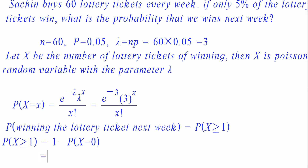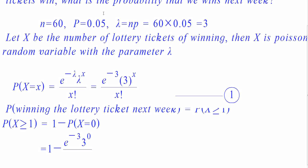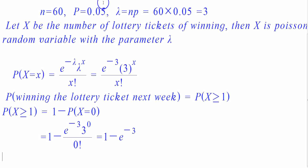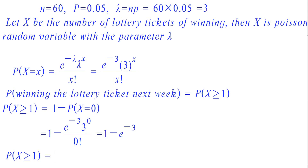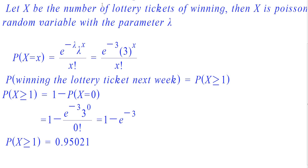That is 1 minus the probability of x equal to 0. Putting x equal to 0 in the equation, we get e raised to minus 3 into 3 raised to 0 by 0 factorial. We know that 3 raised to 0 is 1 and 0 factorial is 1. Therefore, e raised to minus 3 into 3 raised to 0 by 0 factorial becomes e raised to minus 3. Therefore, the probability of winning the lottery tickets in the next week is equal to 0.95021.